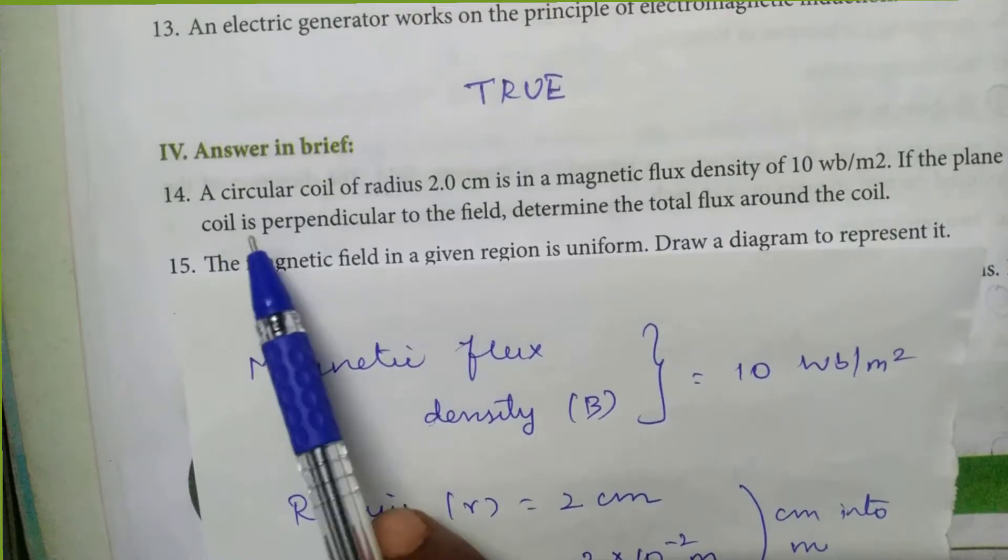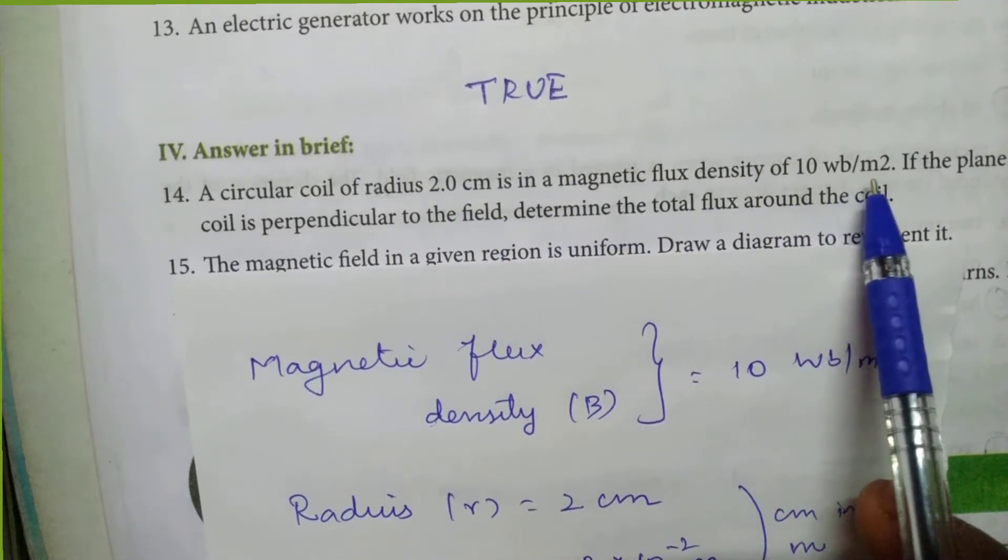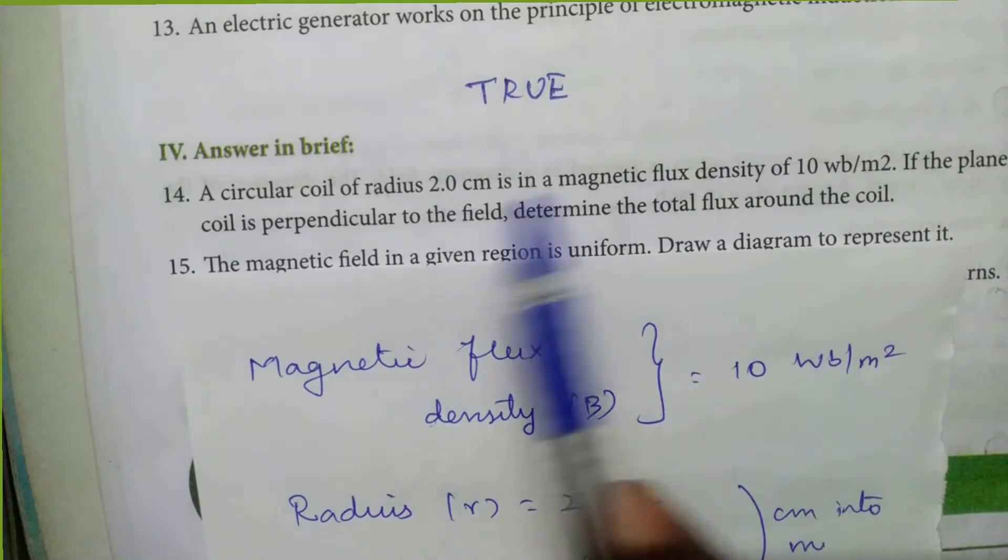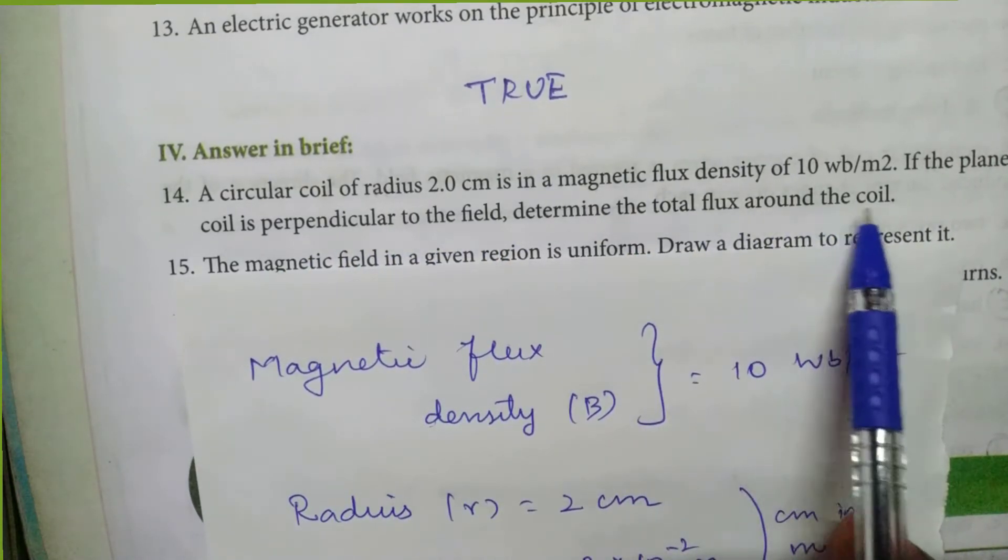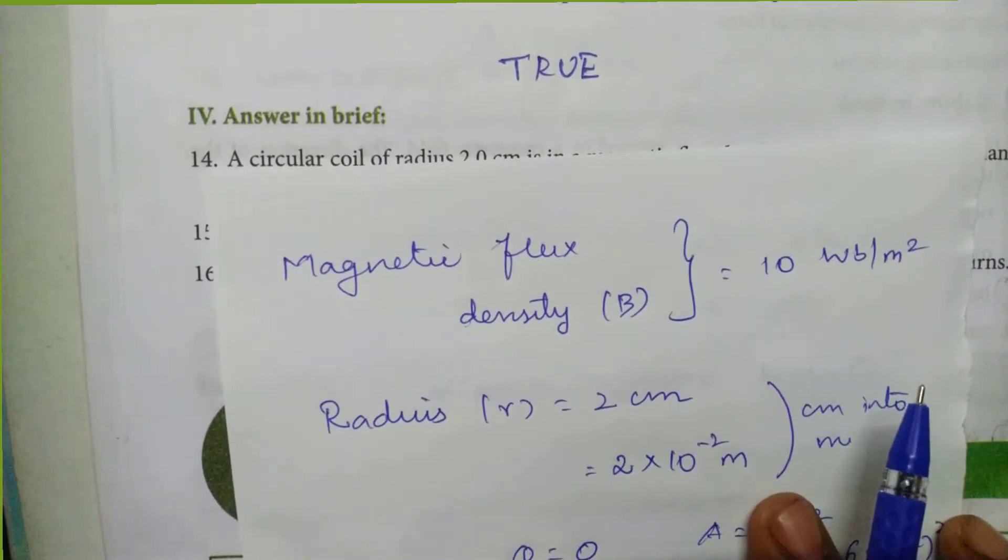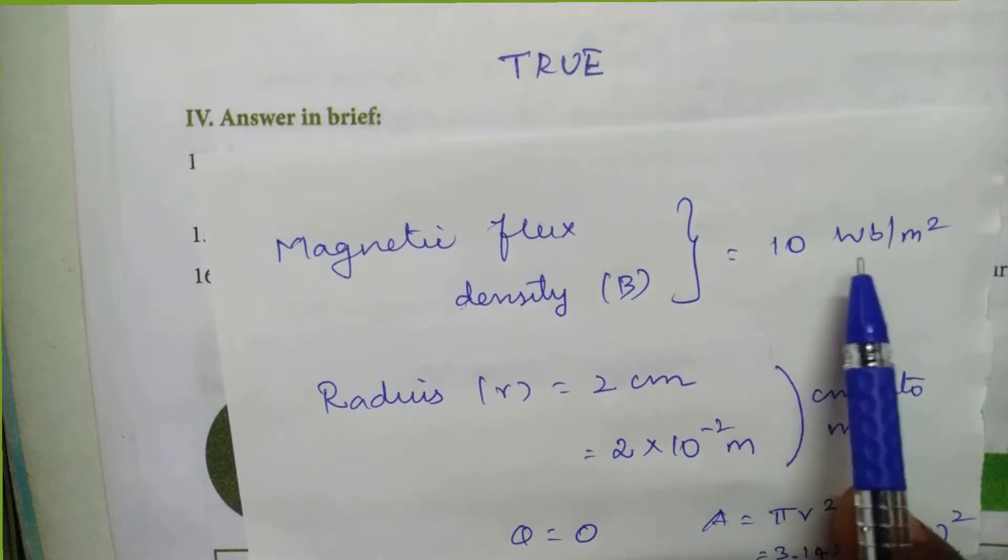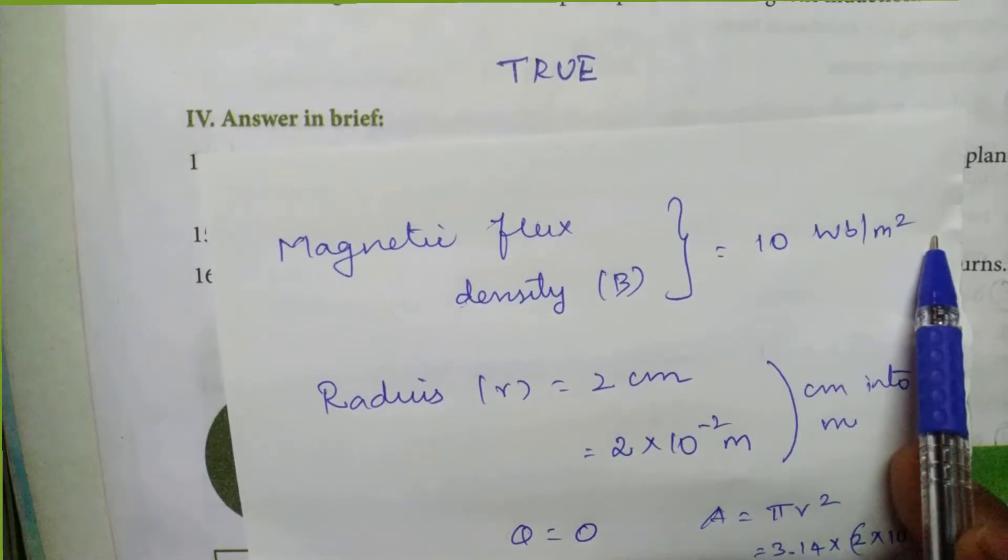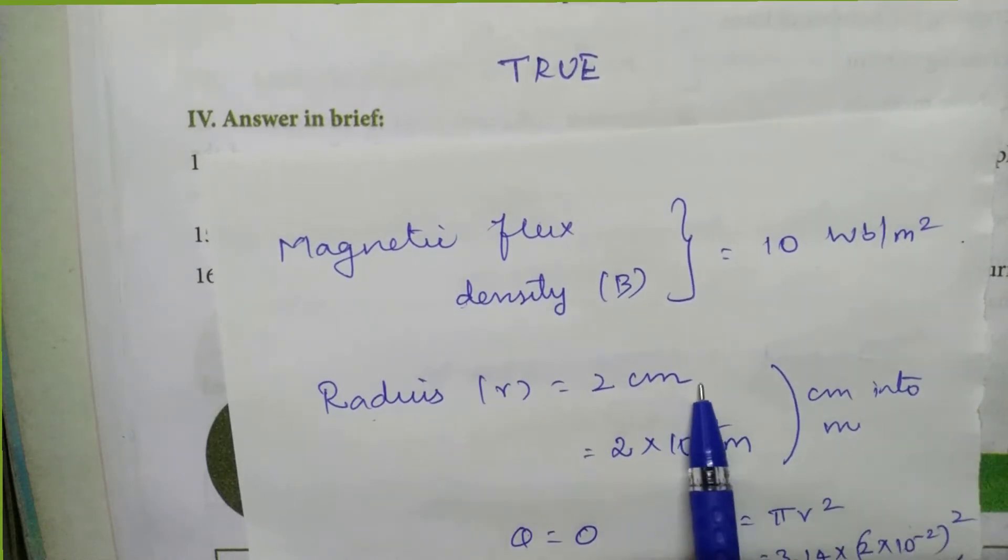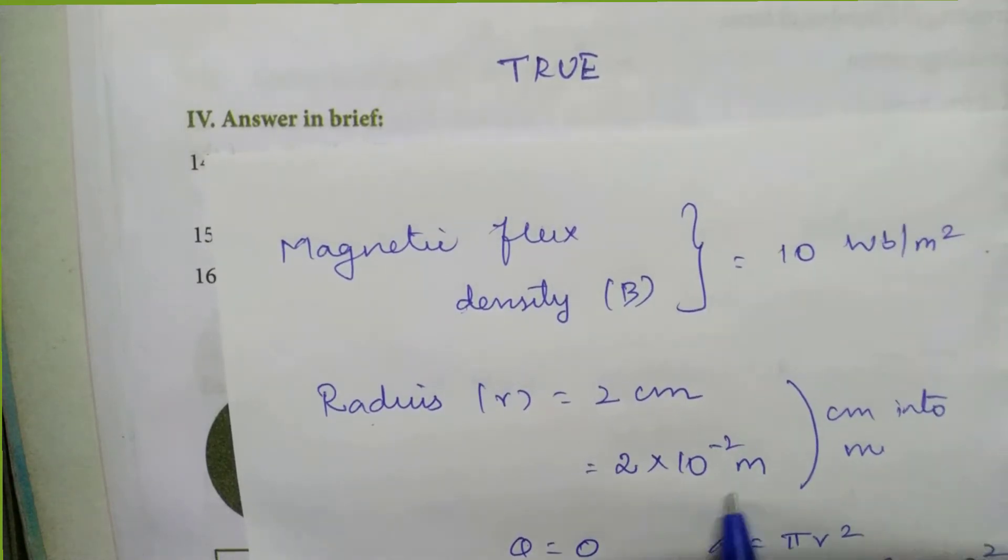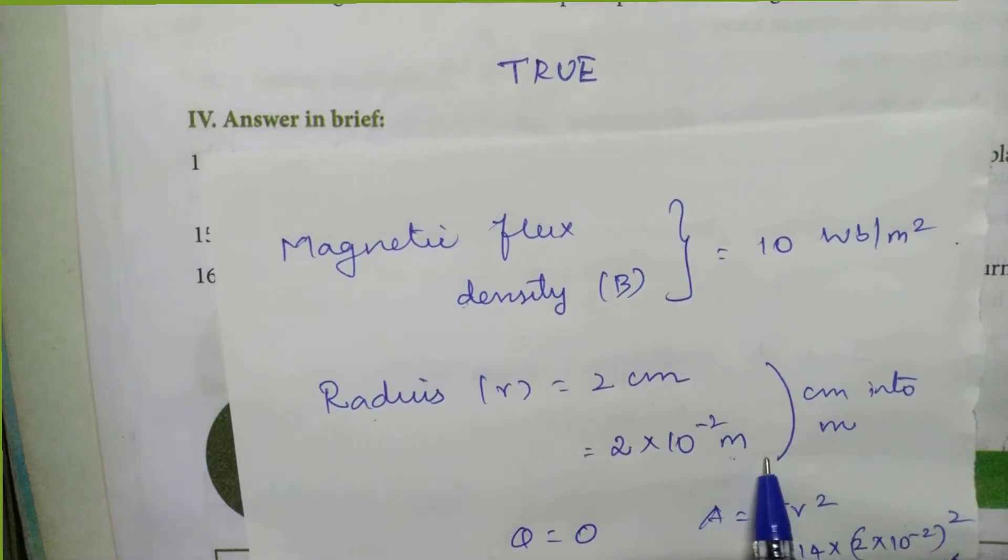Question number 14. A circular coil of radius 2 cm is in a magnetic flux density of 10 Weber per m². If the plane of a coil is perpendicular to the field, determine the total flux around the coil. What are the informations given? Magnetic flux density, that is B, is equal to 10 Weber per m². And radius is given as 2 cm. Because it is given in cm, convert it into m. Then 2 into 10 to the power of minus 2 meter.